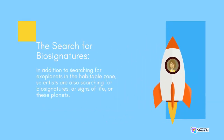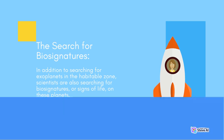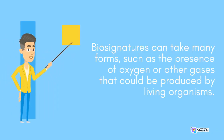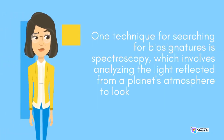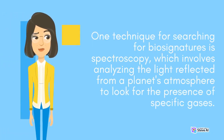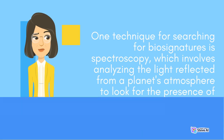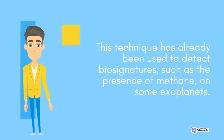In addition to searching for exoplanets in the habitable zone, scientists are also searching for biosignatures, or signs of life, on these planets. Biosignatures can take many forms, such as the presence of oxygen or other gases produced by living organisms. One technique for searching for biosignatures is spectroscopy, which involves analyzing the light reflected from a planet's atmosphere to look for specific gases. This technique has already been used to detect biosignatures such as the presence of methane on some exoplanets.